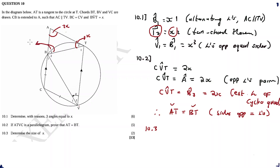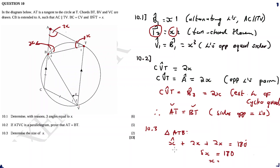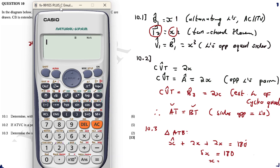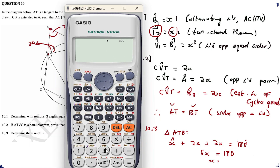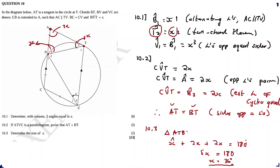In triangle ATB: x plus 2x plus 2x equals 180 degrees, so 5x equals 180, therefore x equals 180 divided by 5, which is 36 degrees. Let me verify — yes, 36. Being a doubter, but they were correct. This concludes Question 10.